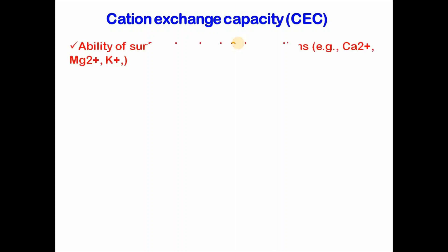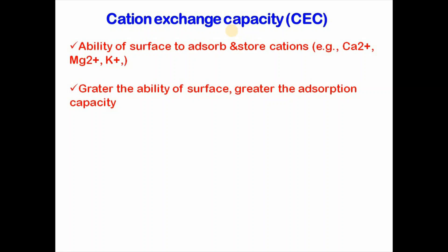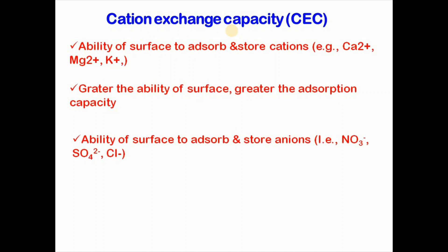Then comes cation or anion exchange capacity. Cation exchange capacity is the ability of a surface to adsorb and store cations — for example, calcium ion, magnesium ion, and potassium ion. The greater the ability of the surface, the greater the adsorption capacity. Anion exchange capacity is the ability of a surface to adsorb and store anions — for example, nitrate, chloride, and sulfate. It is found that the greater the ability of the surface, the greater the adsorption capacity. It is also suggested that most soils have little or no anion exchange capacity.